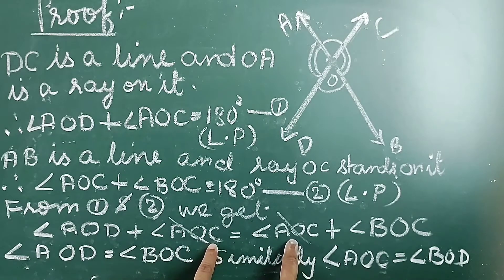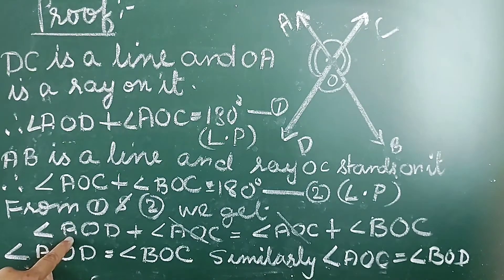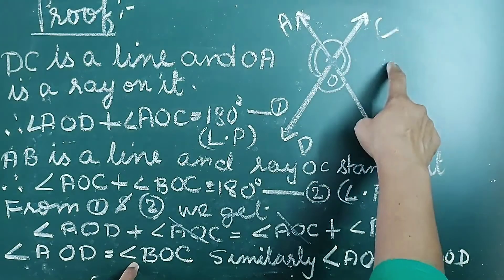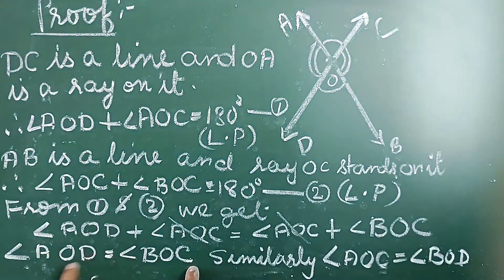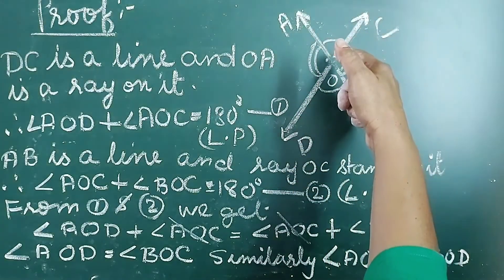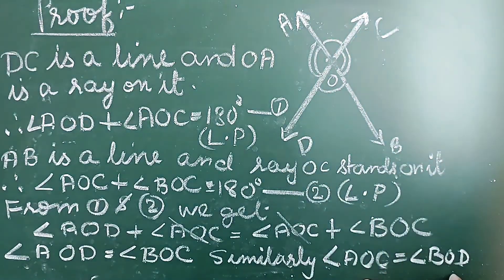After cancelling angle AOC from both sides, we get angle AOD equal to angle BOC. These are a pair of vertically opposite angles and are equal. Similarly, angle AOC equals angle BOD — they are also a pair of vertically opposite angles and are equal. Hence proved.